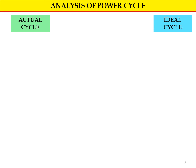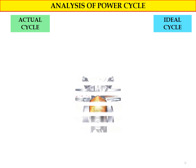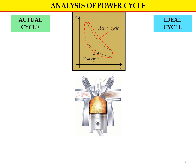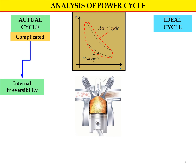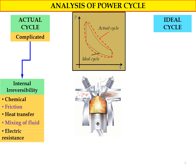In the analysis of a power cycle we look at both the actual cycle and the ideal cycle. Looking at a PV diagram of an internal combustion engine, the black solid line represents the ideal cycle and the red dotted line represents the actual cycle. The actual cycle is complicated and internally irreversible, meaning there are many losses — from chemical reactions, friction, heat transfer out of the system, mixing of fluid, and electrical resistance.